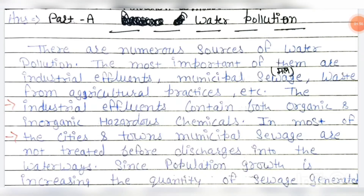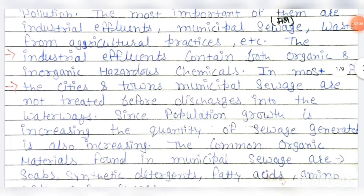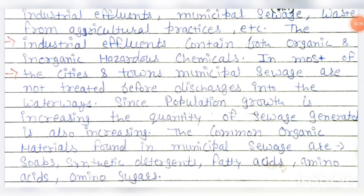There are numerous sources of water pollution. The most important of them are industrial effluents, municipal sewage, and waste from agricultural practices. These three are the main sources. Industrial effluents include all products containing organic and inorganic chemicals that contribute to water contamination.